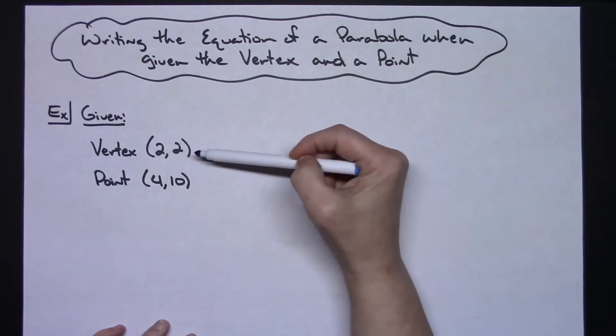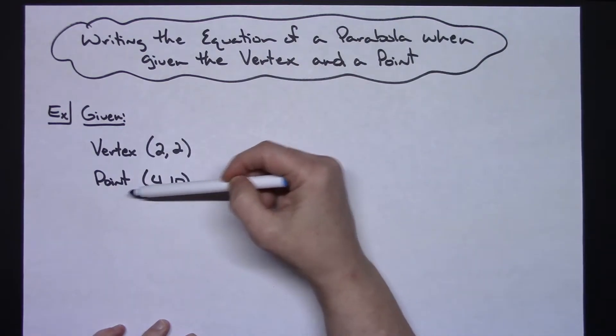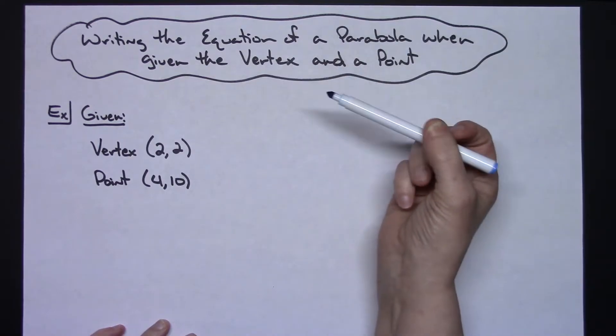So in this first example I've got the vertex at (2, 2). I've got a point that lies on the parabola which is (4, 10).